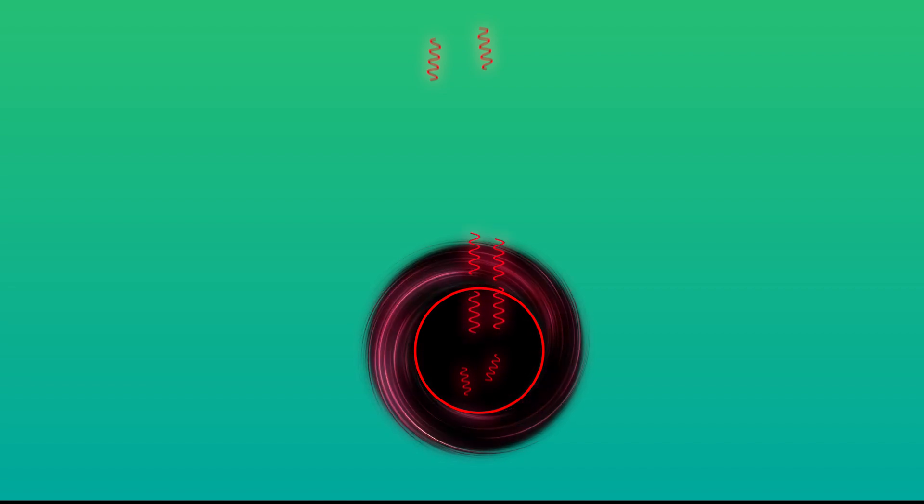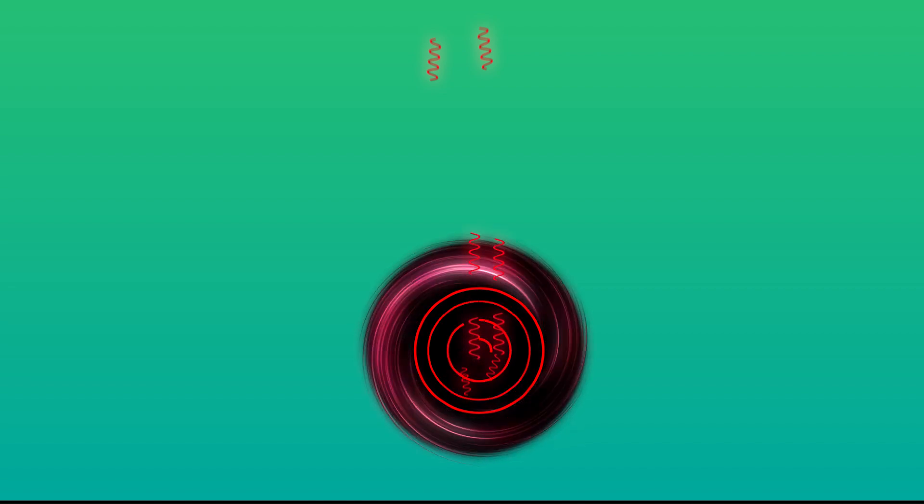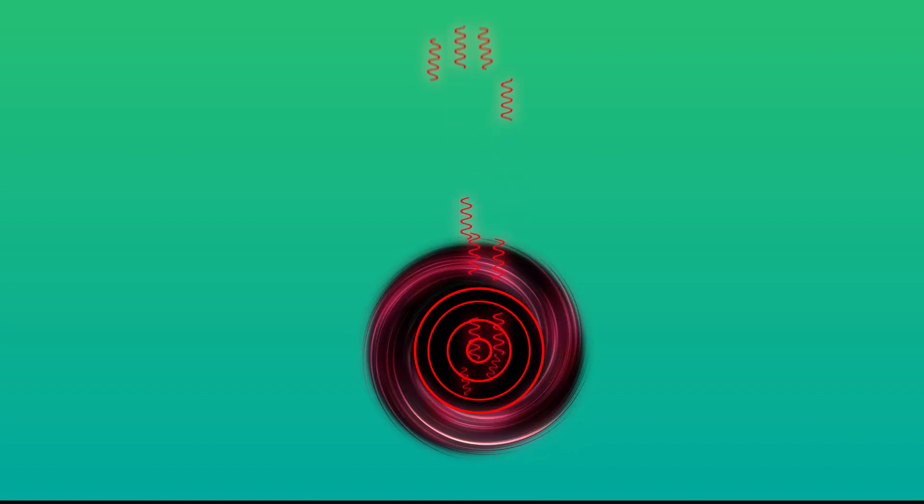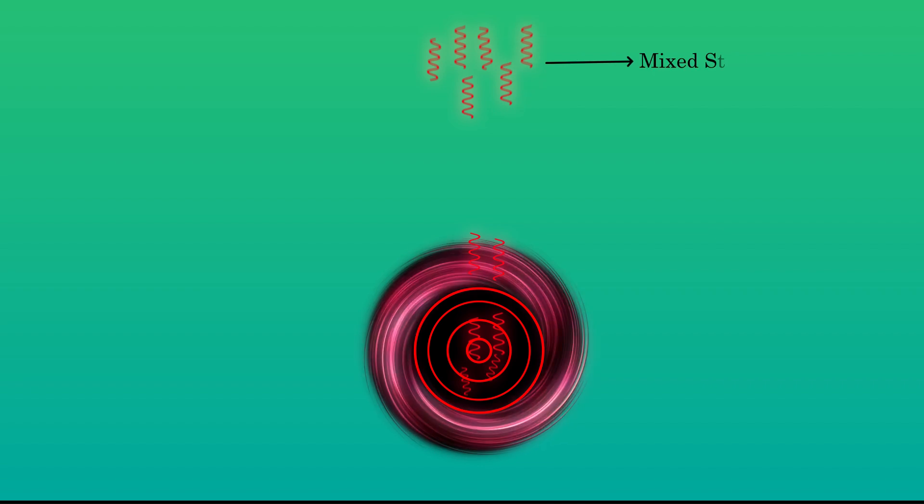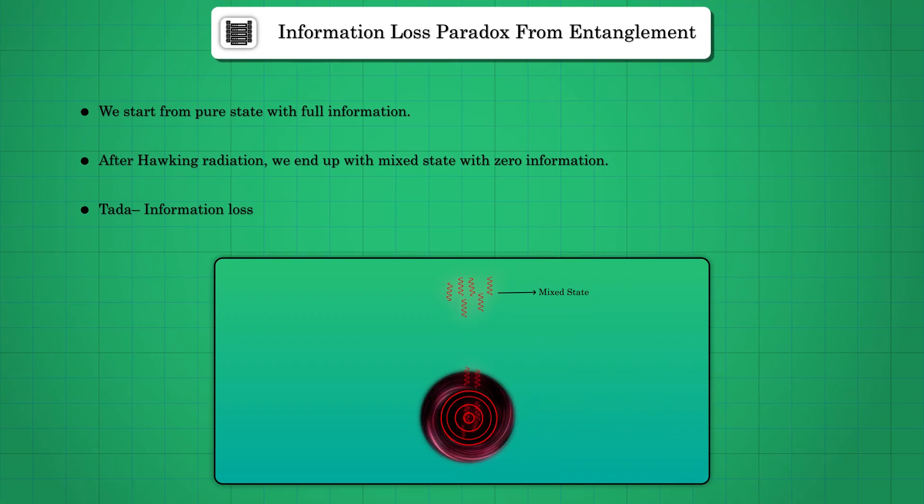This is the information paradox. You began with a pure state where everything was known. By the time the black hole evaporates, you're left with mixed states which provide no information.